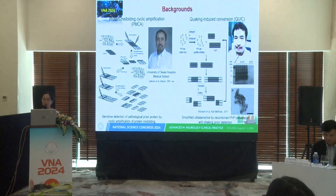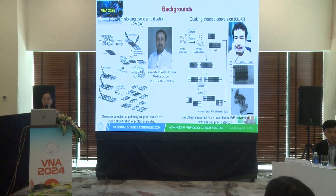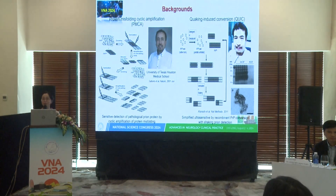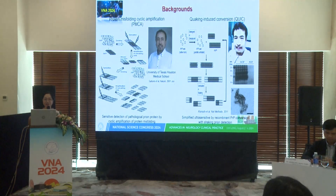This slide shows two methods: protein misfolding cyclic amplification (PMCA) and real-time quaking-induced conversion (RT-QuIC). Both methods can amplify prion seeding activities. Although the methodology is similar, they differ in detection and amplification. PMCA enables sensitive detection of pathological prion protein via cyclic amplification; RT-QuIC is a simplified, ultra-sensitive method coupling PrP conversion with prion detection. In our study, we used RT-QuIC because it is easier, simpler, and cheaper than PMCA.